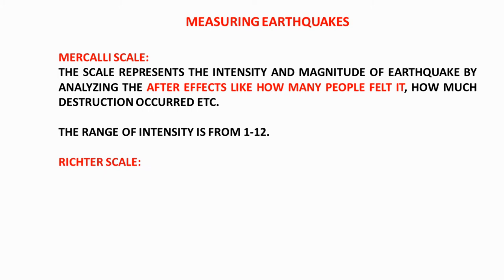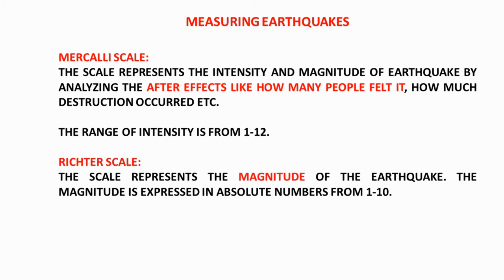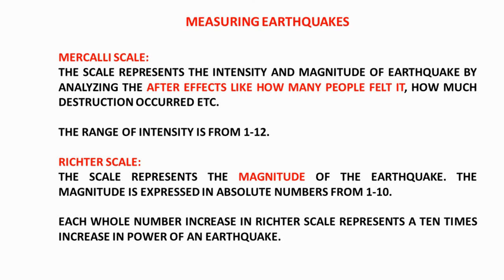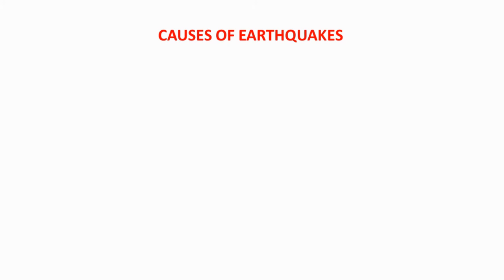The scale we are all familiar with is the Richter scale. It represents the magnitude — how strong the earthquake is. The magnitude is expressed in absolute numbers on a scale of 1 to 10; the higher the value, the stronger the earthquake. Each whole number increase on the Richter scale represents a tenfold increase in the power of the earthquake. For example, a value of 5 is not just one unit more than 4 — it is ten times the power of the previous earthquake.